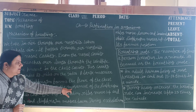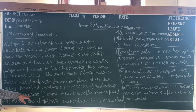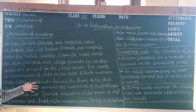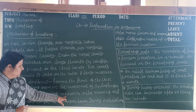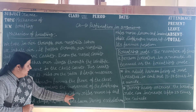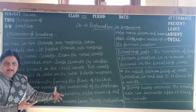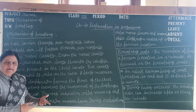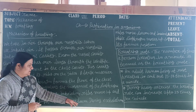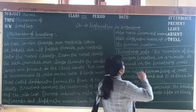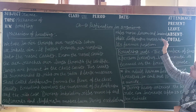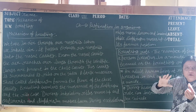Breathing involves the movement of the diaphragm and the rib cage. During inhalation, the ribs move up and outward while the diaphragm moves down. During exhalation, the ribs move down and inward while the diaphragm moves back up to its original position. So, the ribs and diaphragm perform opposite functions.